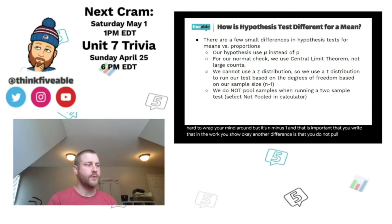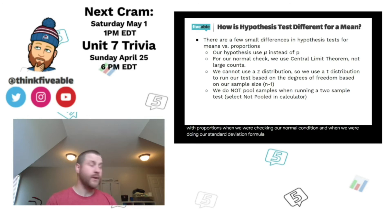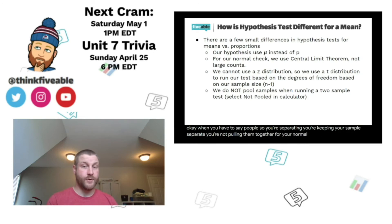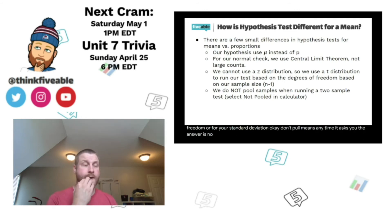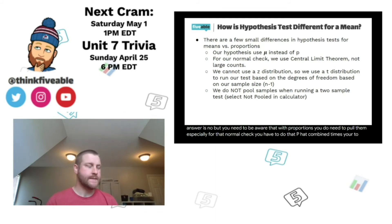Another difference: you do not pool your samples when running a two-sample test for means. We did pool them for proportions — for the normal condition check and the standard deviation formula. For means, your calculator will ask pooled or not pooled, and you select not pooled. You keep your samples separate for the normal check, degrees of freedom, and standard deviation. For proportions, however, you do need to pool, especially for the normal check using p-hat combined times your two sample sizes.